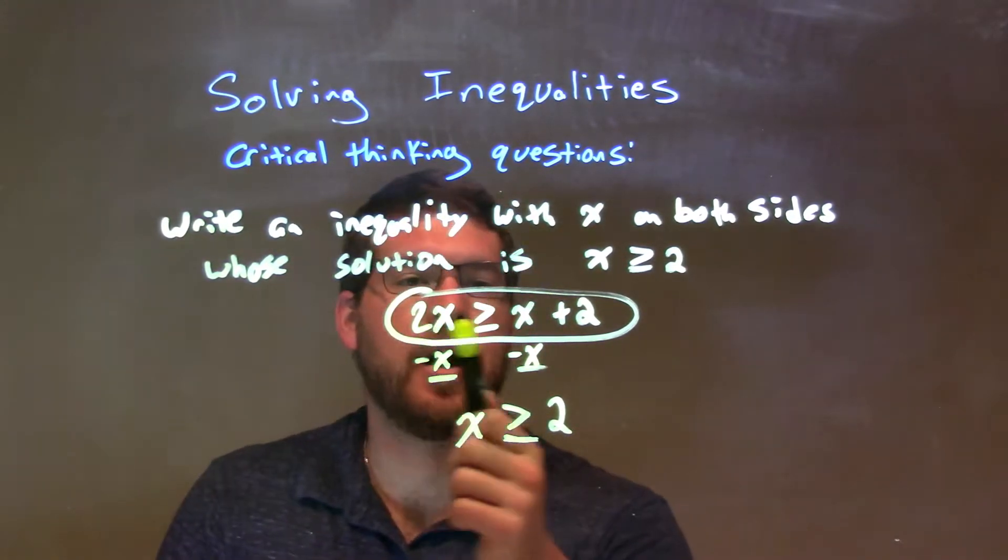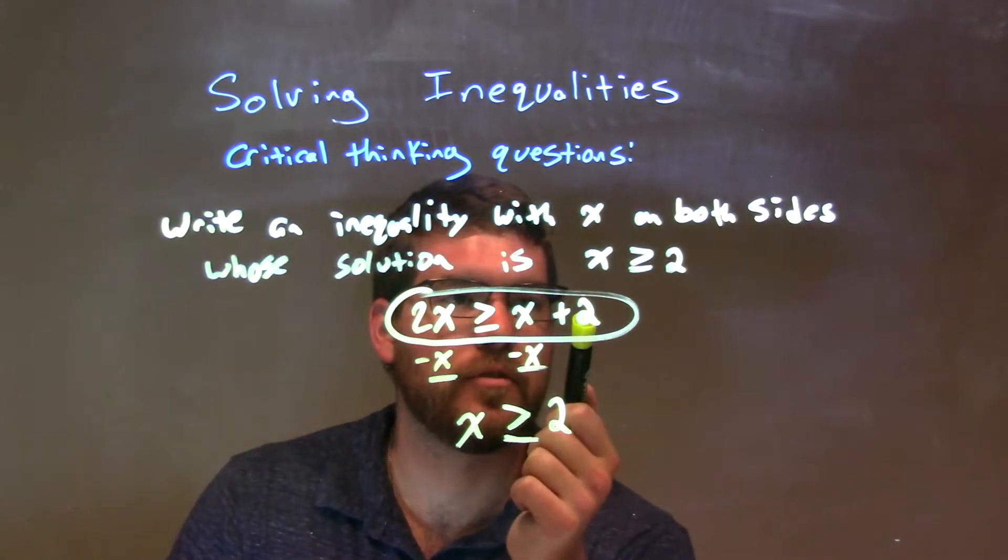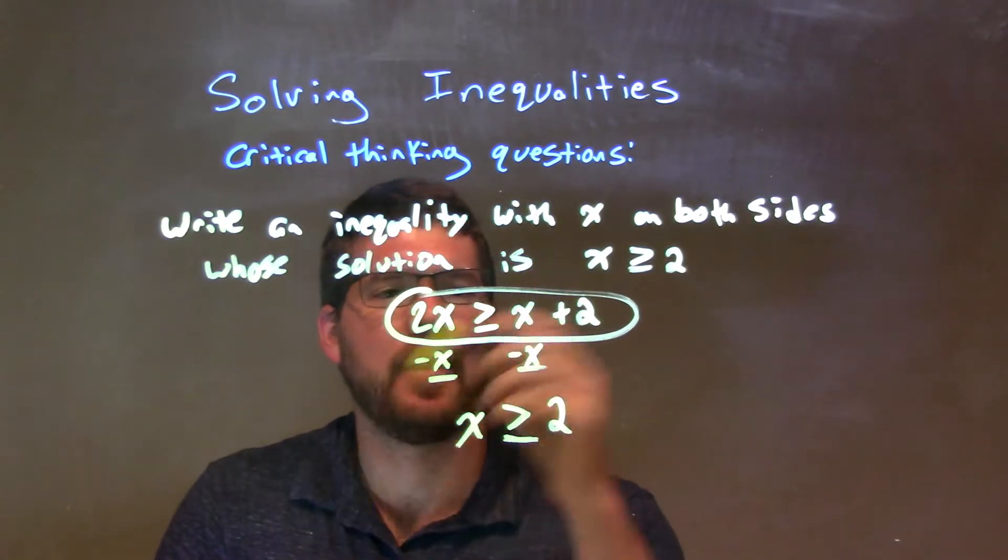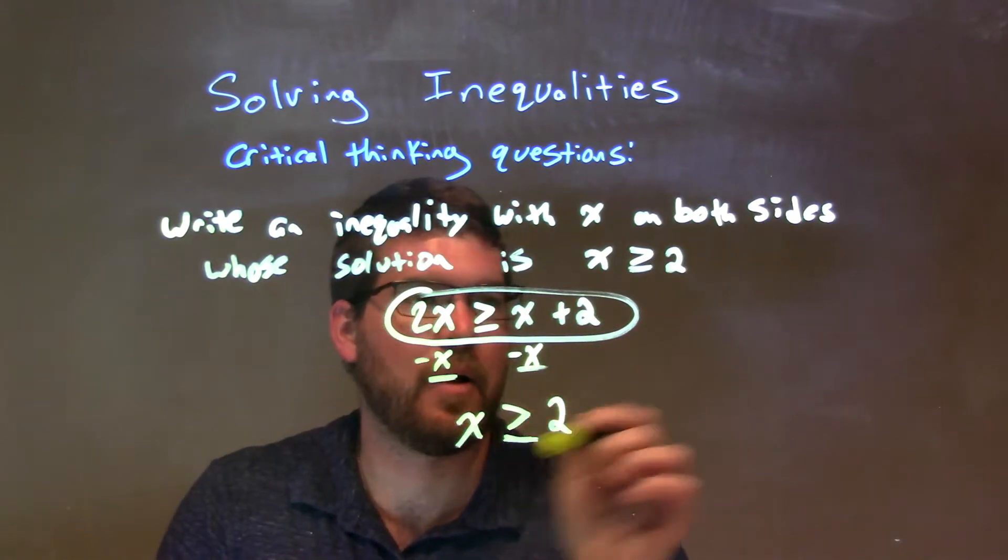Now, what I wrote here, just 2x is greater than or equal to x plus 2. Okay? And then I subtracted x from both sides to show that I would get my solution.